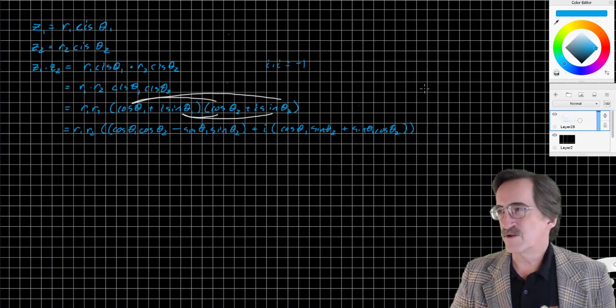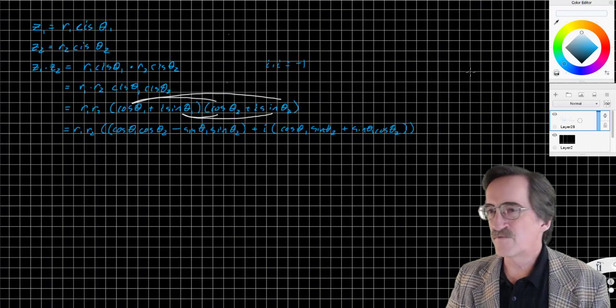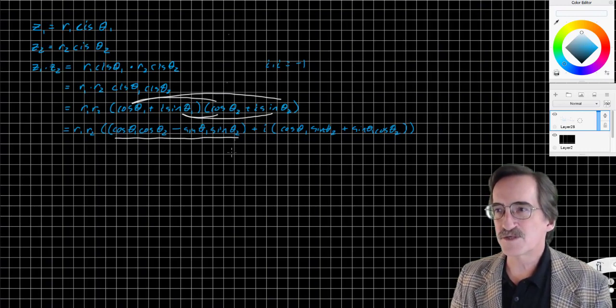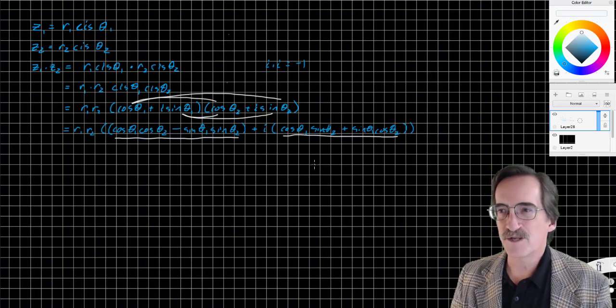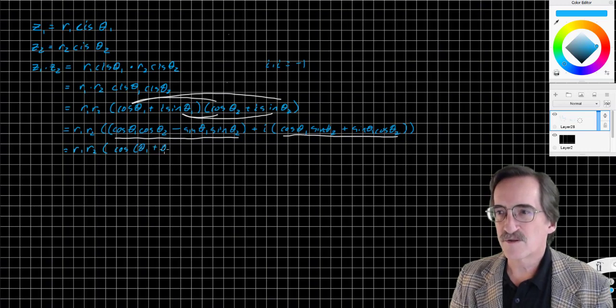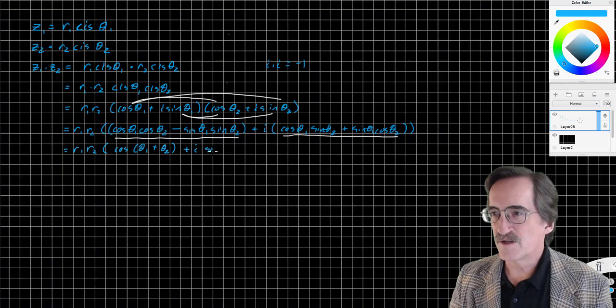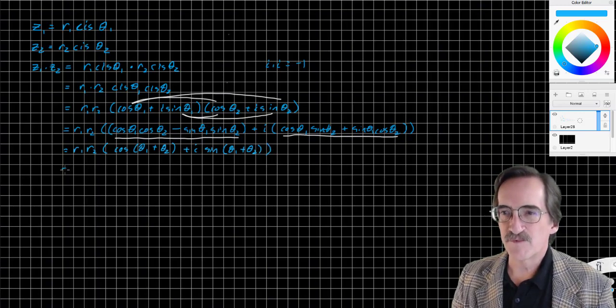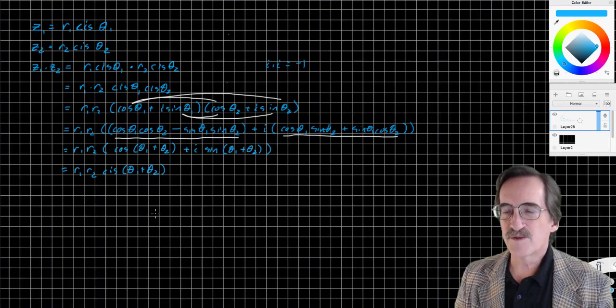The reason I separated it like this is this one on the left is the very definition of the cosine addition identity, and this identity is the sine addition identity. So R1 R2, this is going to be cosine theta 1 plus theta 2, plus i sine theta 1 plus theta 2. And we can simplify this to R1 R2 cis theta 1 plus theta 2. So that's the derivation of the rule.